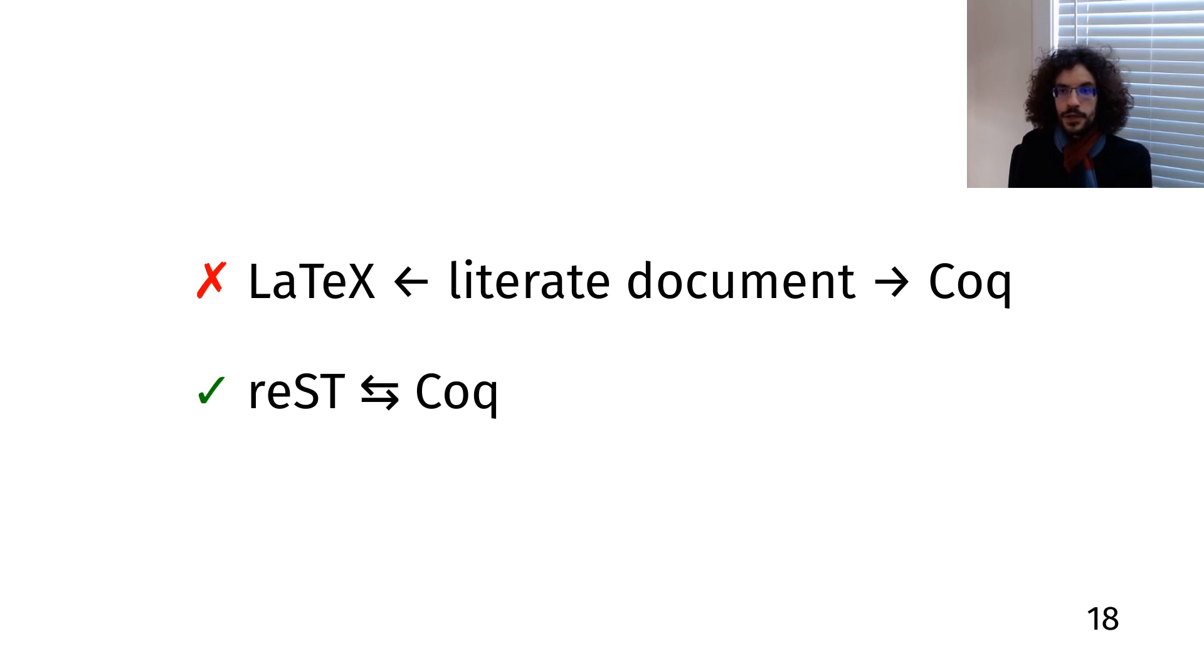If you're familiar with literate programming, you might notice that this is a bit different from the usual process. Normally, in systems like web or org mode, you start with a main document, which you either tangle to get executable source code, or weave to get a document suitable for typesetting or reading, like LaTeX or HTML.